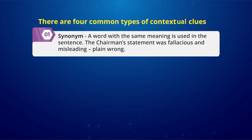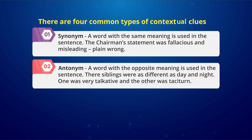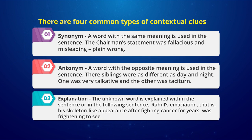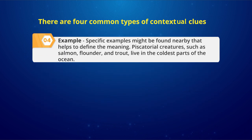We have now seen skimming, scanning, and top-down and bottom-up models. Let us move on to contextual clues, which help the reader read better. There are four common types: first, synonyms — a word with the same or near meaning is used in the sentence; second, antonyms — a word with the opposite meaning is used; third, explanation — the unknown word is explained within or after the sentence; and fourth, example — specific examples nearby help define the meaning.